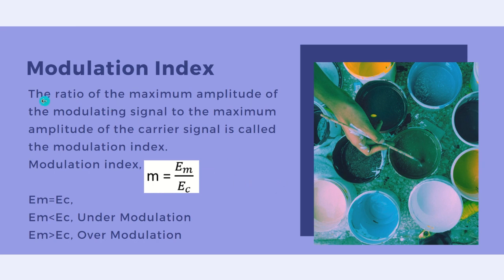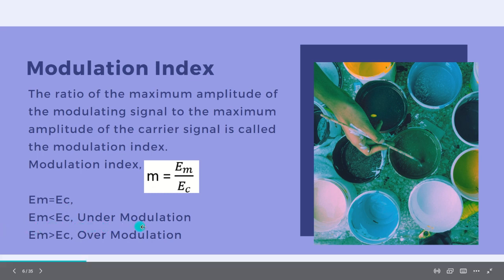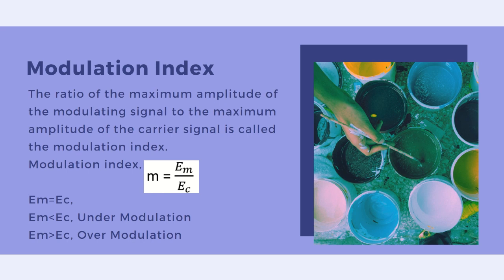Next is modulation index. The ratio of the maximum amplitude of the modulating signal to the maximum amplitude of the carrier signal is called the modulation index, given as M = EM / EC. If EM equals EC, we have 100% modulation. If EM is less than EC, it is called under modulation. If EM is greater than EC, it is called over modulation. The modulation index expressed in percentage is called percentage modulation.